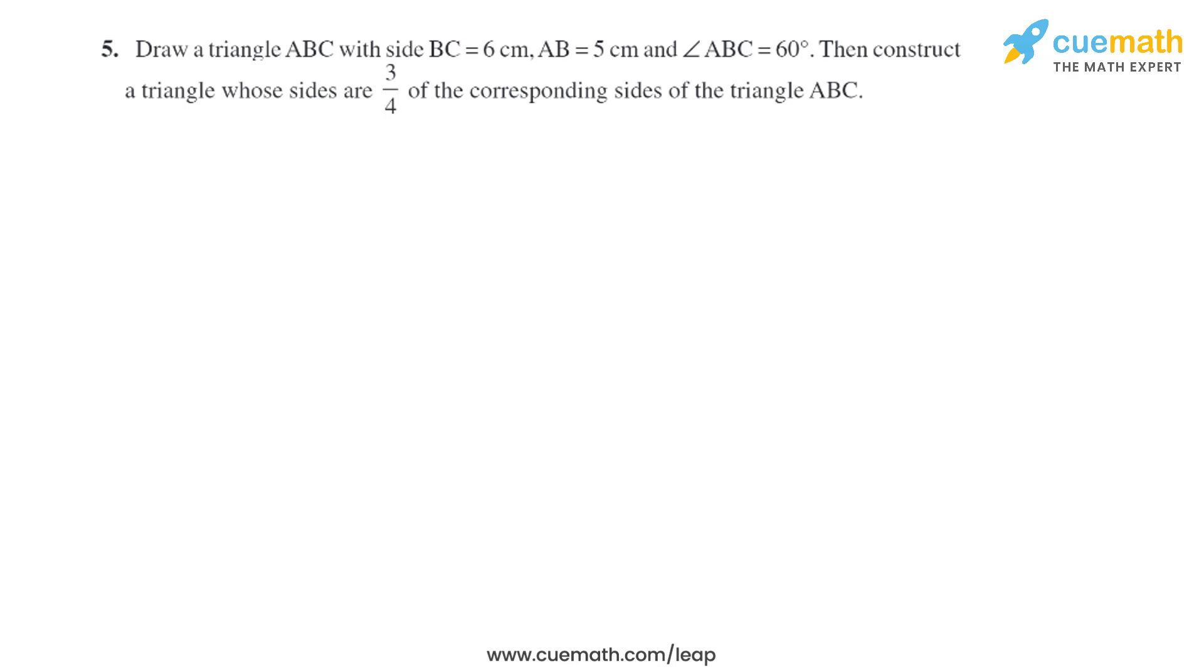Let's start with the steps of construction. Draw BC equals 6 centimeters. At B, make angle CBY equals 60 degrees and cut an arc at A so that BA equals 5 centimeters. Join AC. Triangle ABC is obtained.